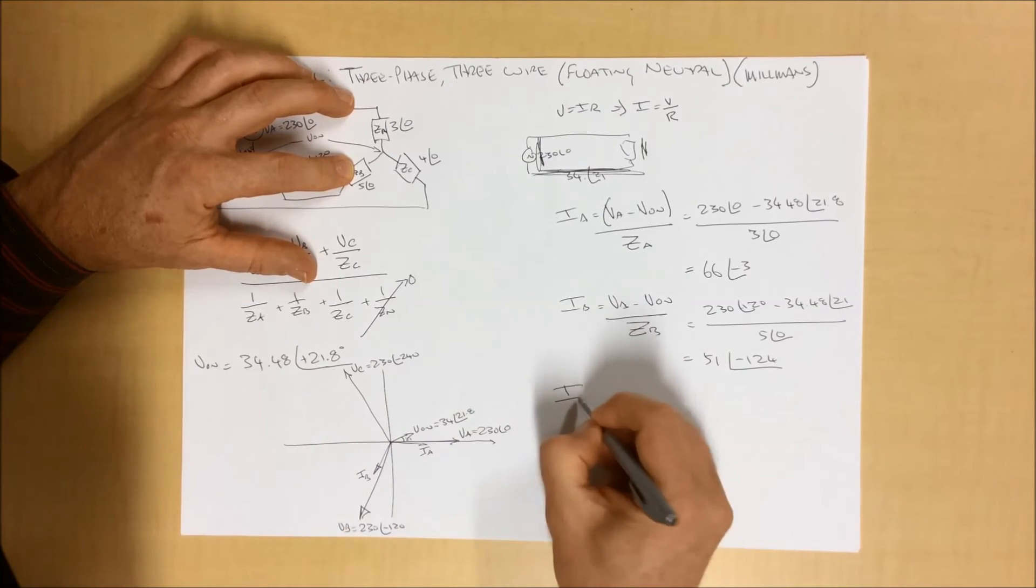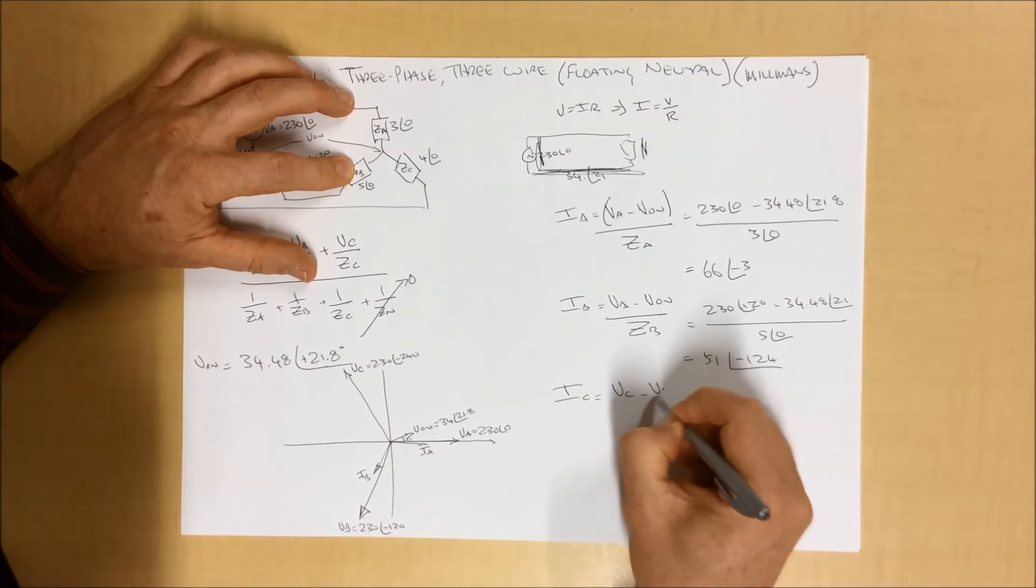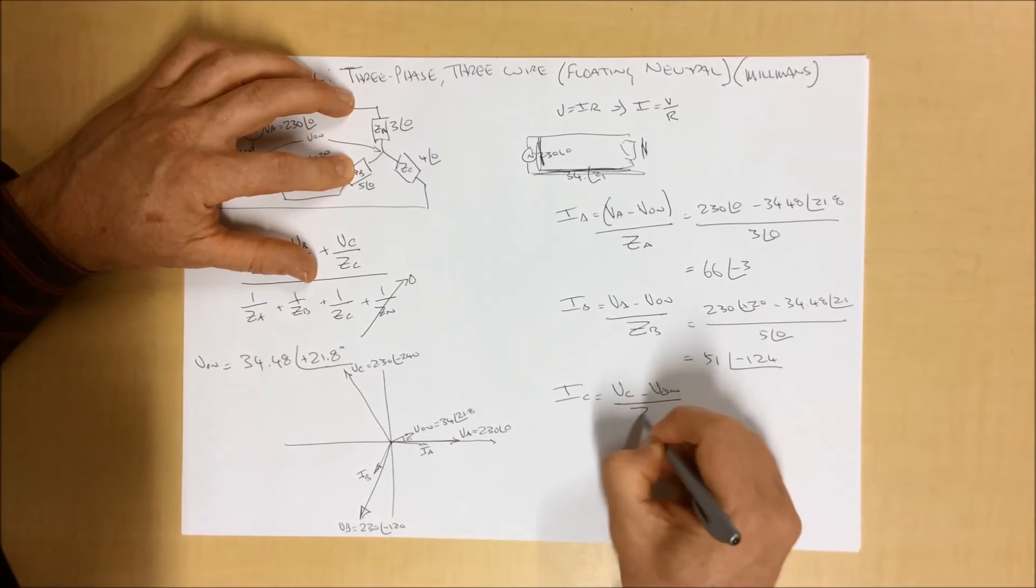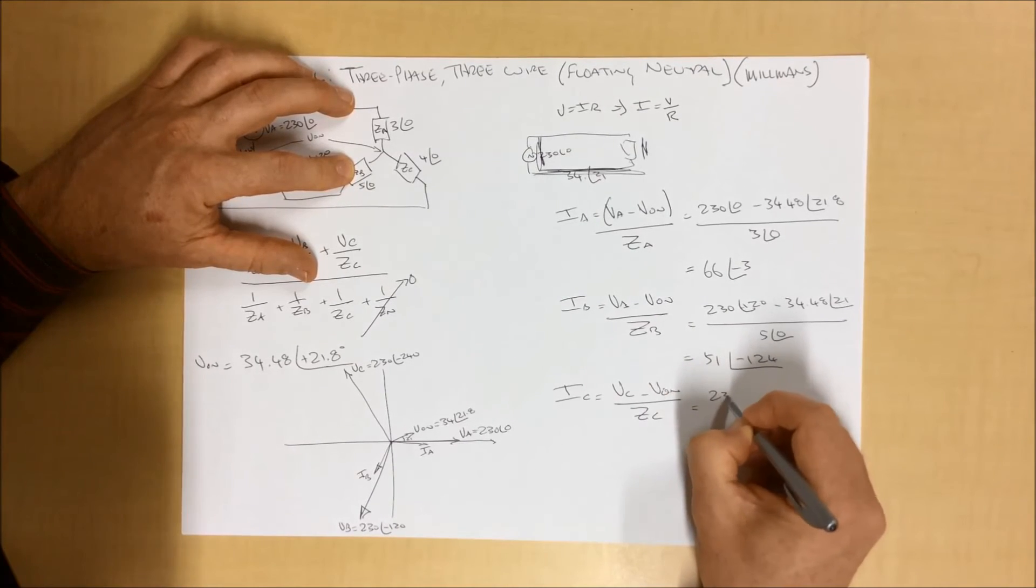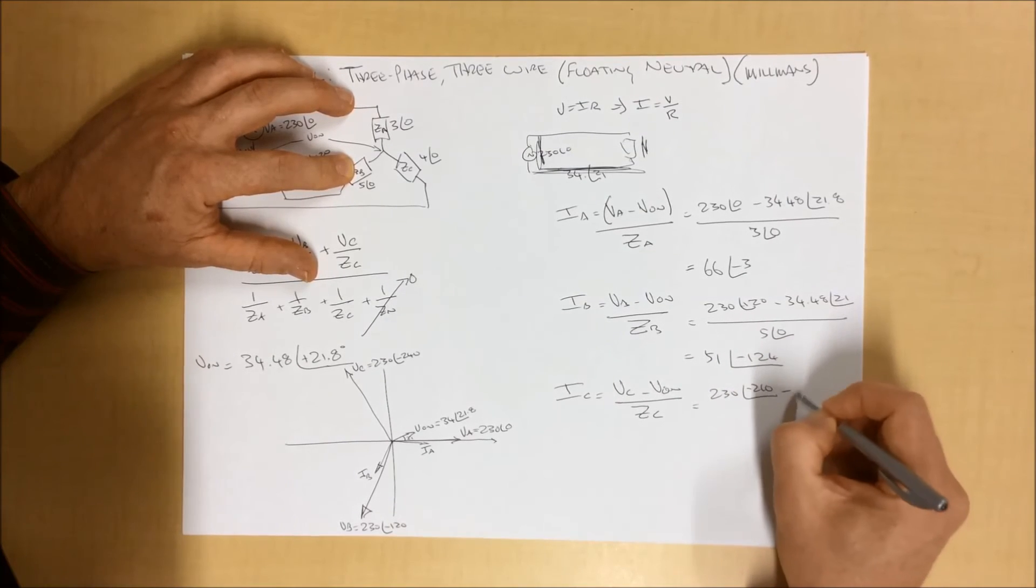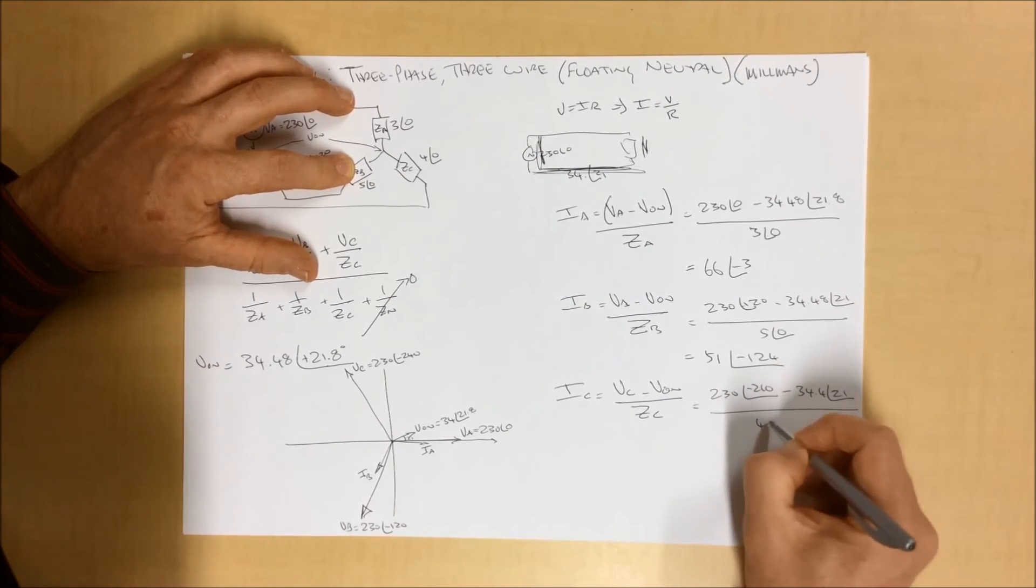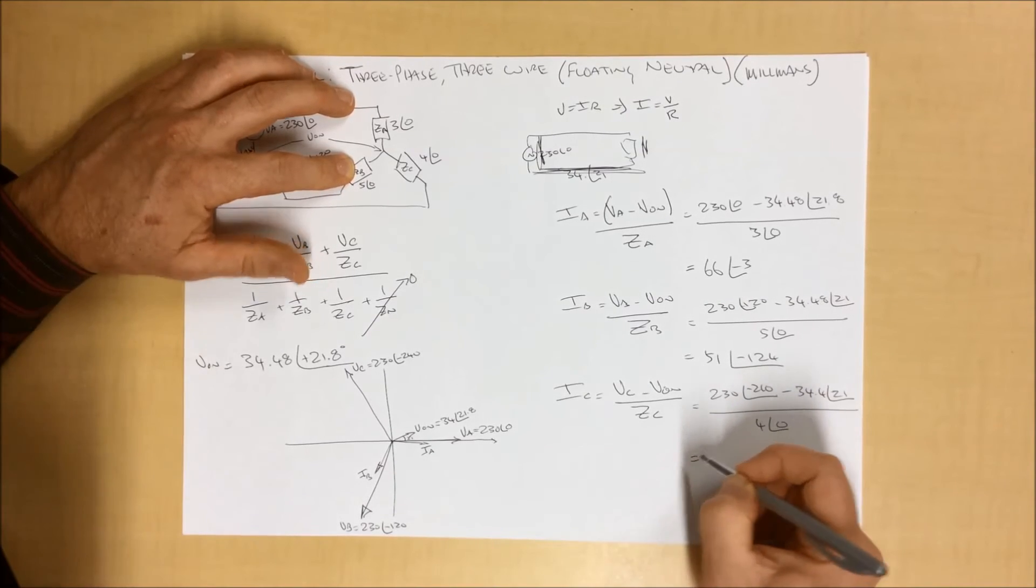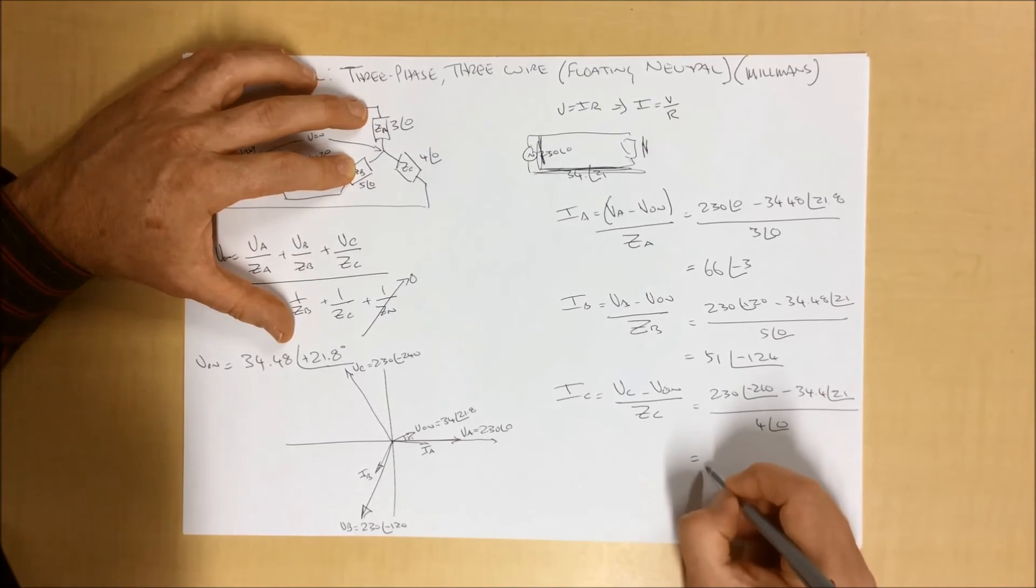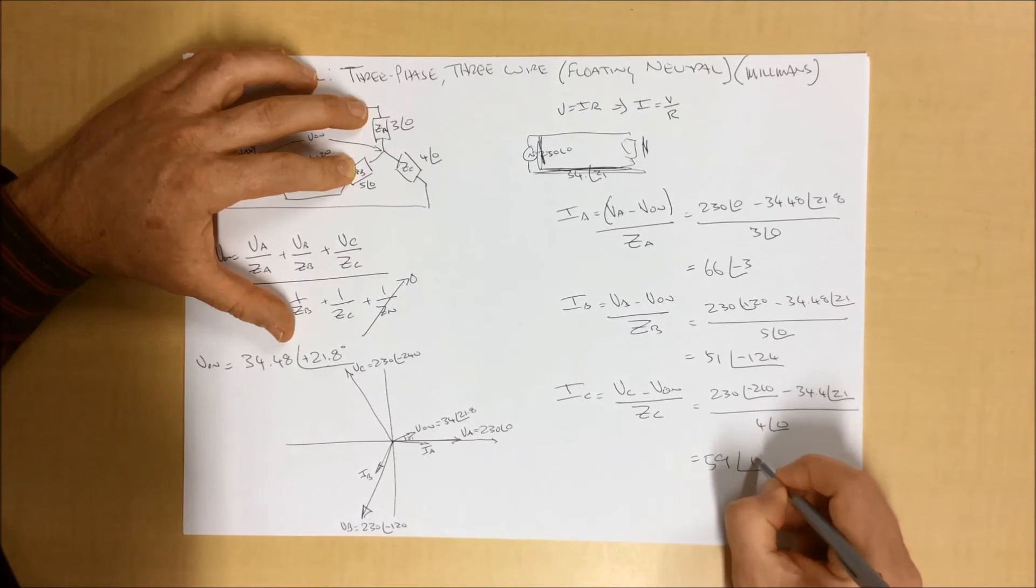To find IC, it's again the same process. VC minus VON at an angle of 21, all over 4 ohms. And our solution there is 59 at an angle of 127.